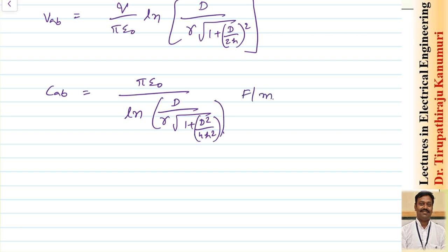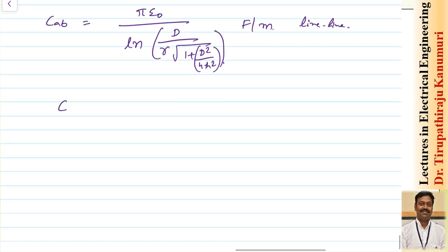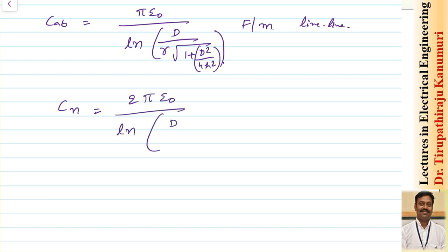CAB will be equal to π ε₀ over ln of d over r times √(1 + d²/4h²). This value is in farads per meter. This is the line-to-line value because we are calculating between A and B. If you want to calculate the capacitance between the phase and the neutral point, represented by Cn, then since this is equivalent to two capacitors connected in series — one capacitor between the conductor and the earth, another capacitance between the earth and the negative conductor — Cn will be 2π ε₀ over ln of d over r times √(1 + d²/4h²), in farads per meter to neutral.